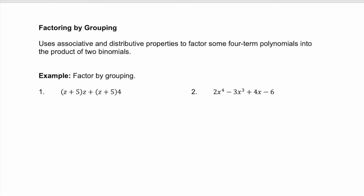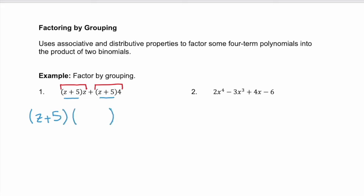Let's look at example 1. We have 2 terms. Notice that these 2 terms each have 2 factors, and specifically they both have the factor (z + 5) in common. If we factor out that binomial, z plus 5, we're left with a binomial, z plus 4.